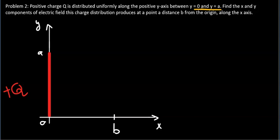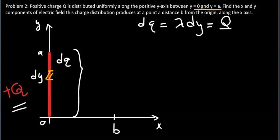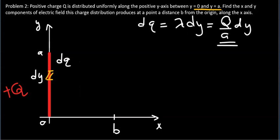We use the same technique: divide the entire line charge into small segments. An arbitrary segment at position y has length dy and contains charge dq = lambda·dy, where lambda is the linear charge density. Since the total charge is Q and total length is a, lambda = Q/a, giving dq = (Q/a)·dy.